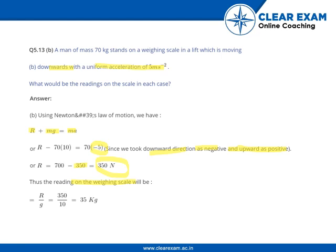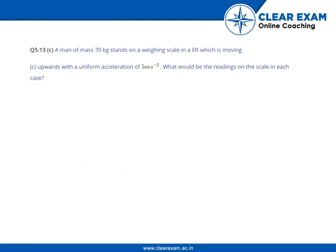The reading on the weighing scale will be the resultant force divided by acceleration due to gravity, that is 350 divided by 10, that is 35 kg. In the third scenario, the lift is moving upward with a uniform acceleration of 5 meters per second squared. What would be the reading on the scale?